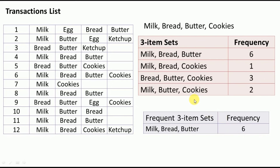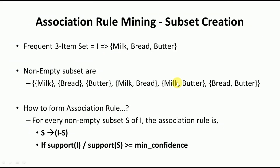Now we move to the second part: writing association rules. The frequent itemset I is milk-bread-butter. We first list all non-empty subsets: milk, bread, butter, milk-bread, milk-butter, bread-butter. The full set milk-bread-butter is excluded since it would leave nothing on the right-hand side.